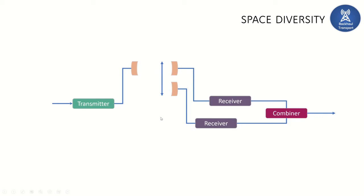In space diversity, there are two different antennas. They are connected with receivers, and both receivers are connected with combiners. The transmitter antenna sends a signal which is received by two different antennas. These two antennas at the receiver side are separated over a distance. Remember, this separation between the two antennas is a crucial factor.